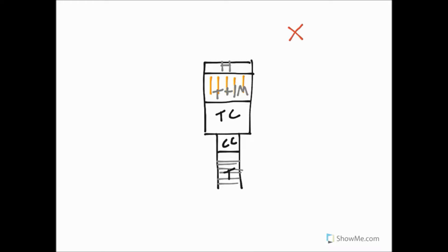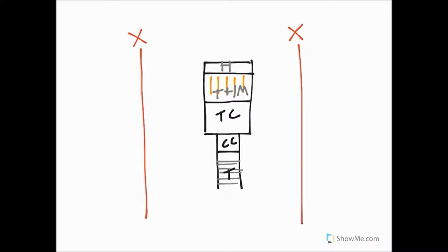Now let's add the vagus nerve, drawn on either side going all the way down — shooting off to supply structures of the thorax and abdomen. It's sometimes called 'the wanderer' because as a cranial nerve it wanders down the neck and into the rest of the body for parasympathetic innervation.